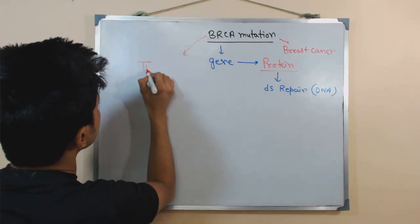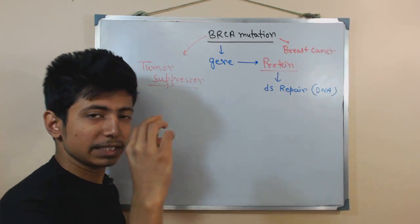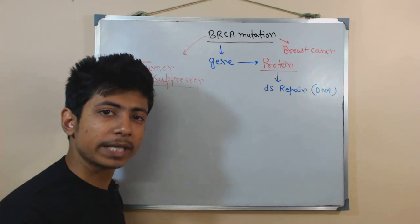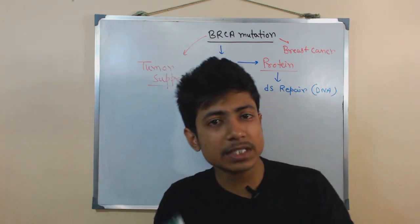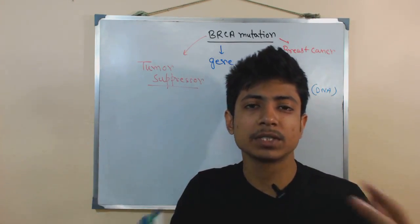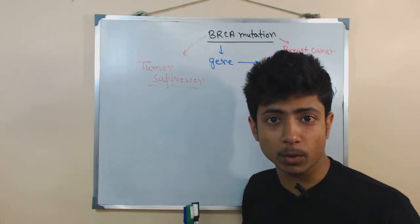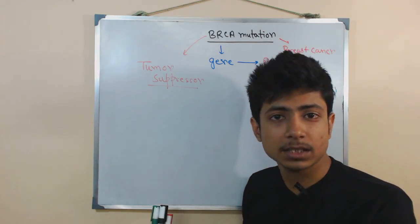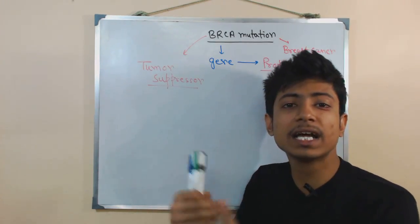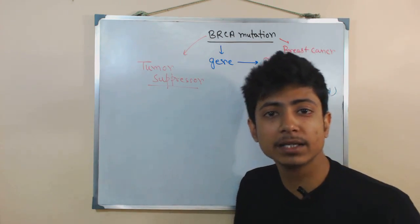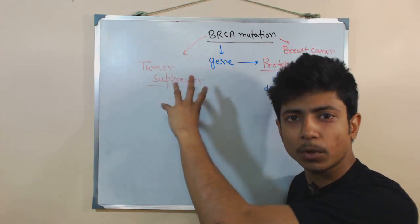The BRCA gene is called a tumor suppressor gene. As the term suggests, this gene suppresses the growth of tumor. Cancer is called a malignant tumor — cells continuously divide and produce a huge mass of cells which can travel from one place to another. The BRCA gene is one of the genes present in our body to fight against cancer, because it produces proteins that block tumor malignancy and continuous cell growth.